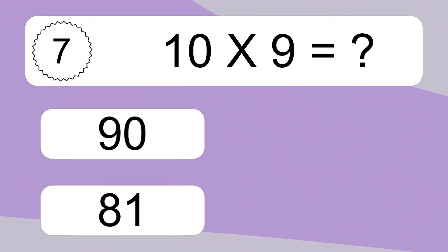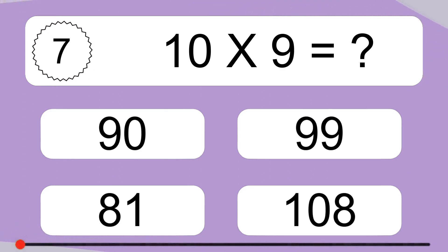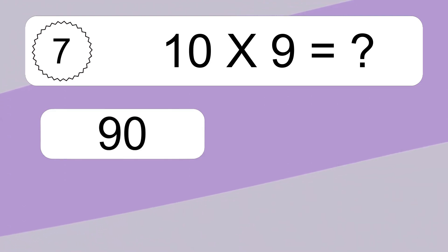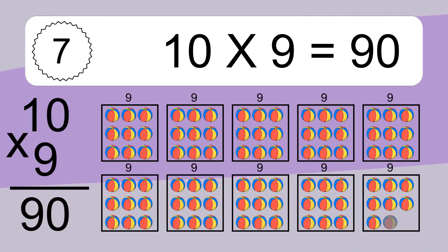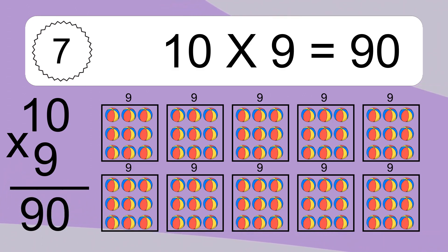10 x 9 equals what? 10 x 9 equals 90. We have 10 boxes and each box has 9 colorful balls inside. If you count all the balls in all the boxes together, you will have 10 x 9 balls. This equals 90 balls.